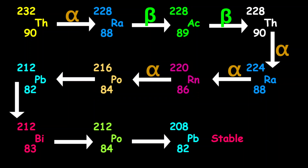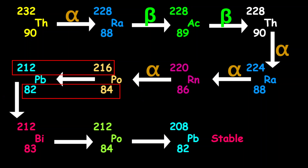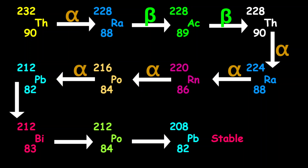Coming from polonium-216 into lead-212, the mass number decreased by 4 and the proton number decreased by 2, so this is another alpha decay.